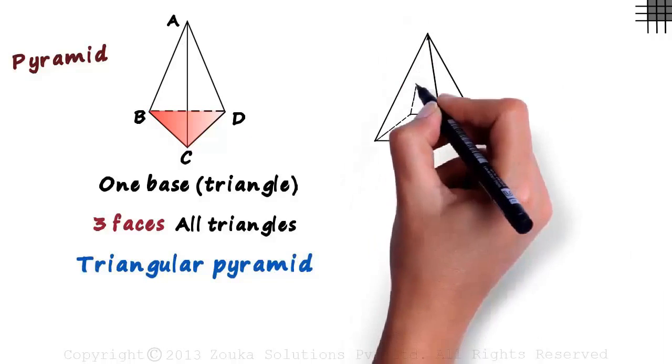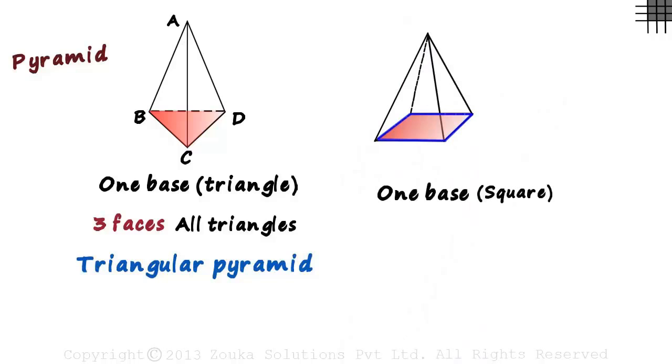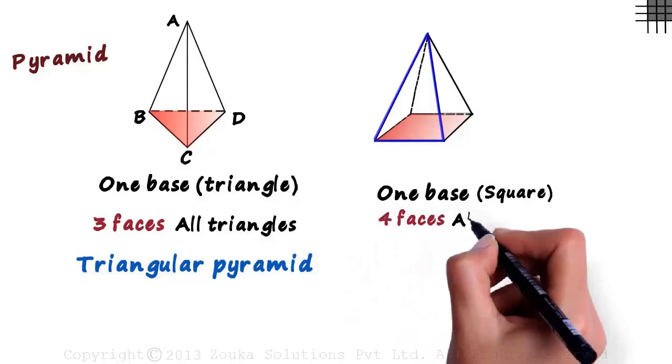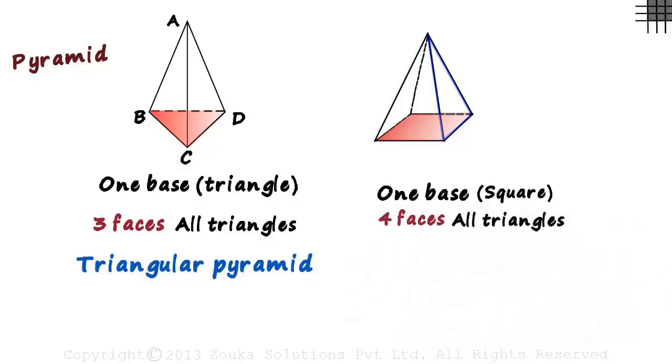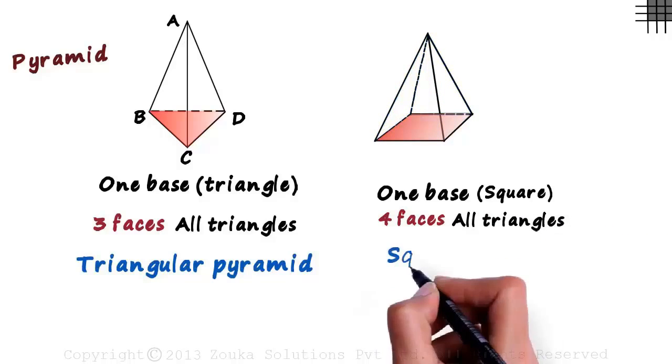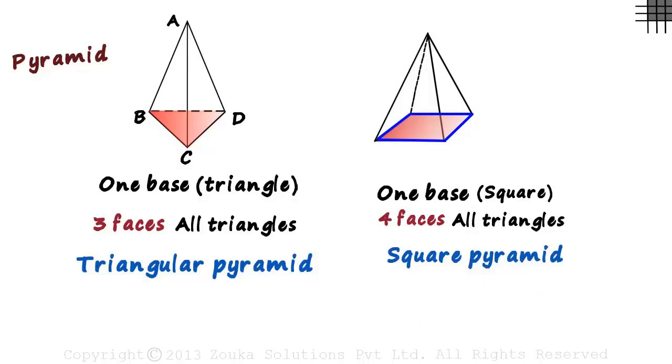Here's another figure. It has one base which is a square and this figure has four faces, all of which are triangles. It has one triangle placed on each side. This is called a square pyramid since the base is a square.